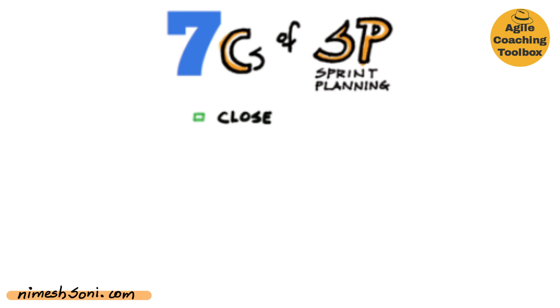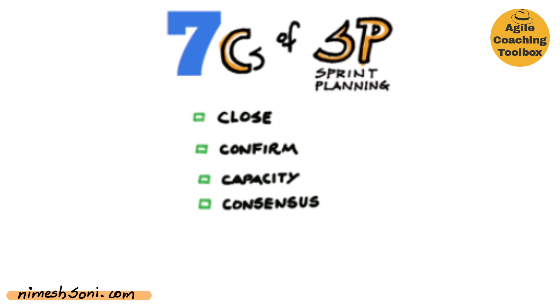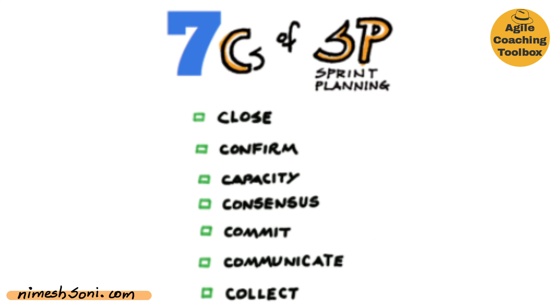The seven C's refer to: close, confirm, capacity, consensus, commitment, communicate, and collect. Now let me explain each of these C's in detail to help you make your sprint planning the most productive event.